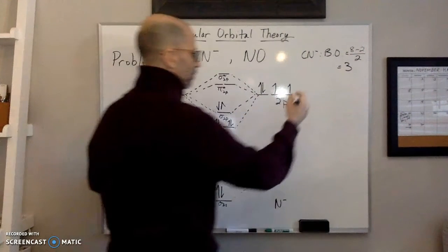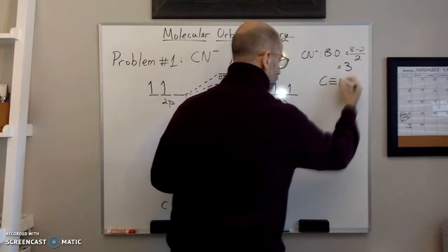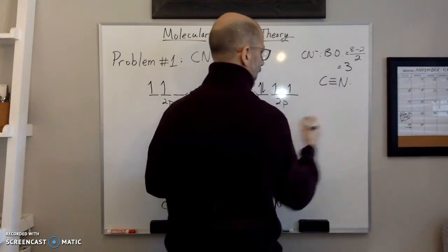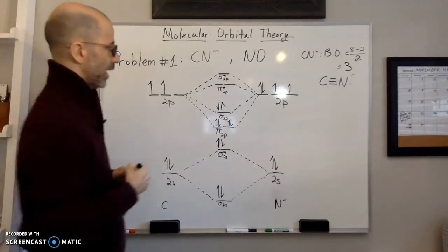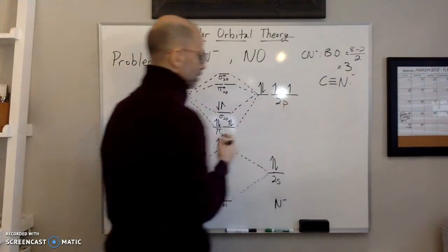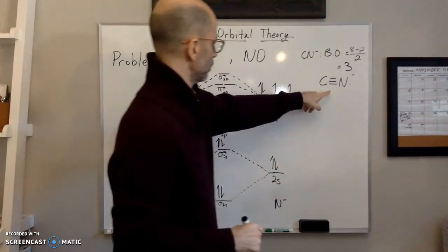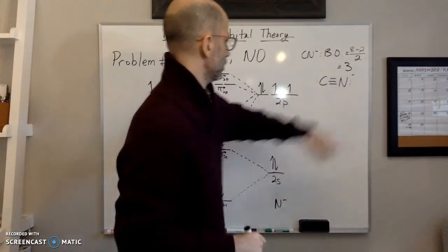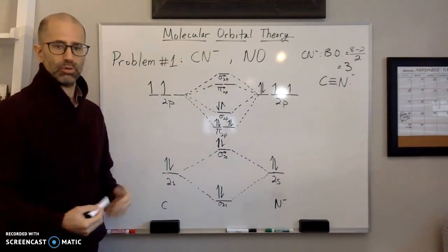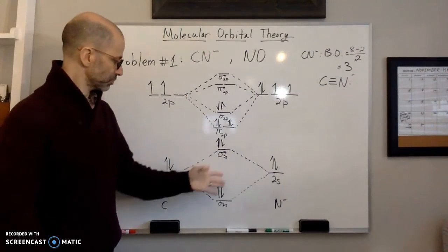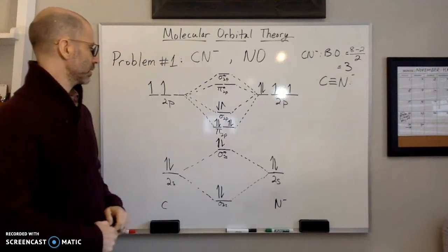And so eight minus two is six divided by two is three. So we have a bond order of three. So the number of bonds is going to be like that. So we got our negative sign there. And we have something like that. So that's our Lewis dot structure for this. And this is our orbital diagram for CN minus.